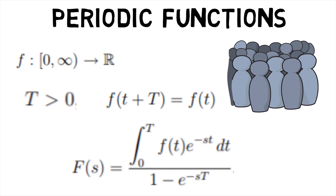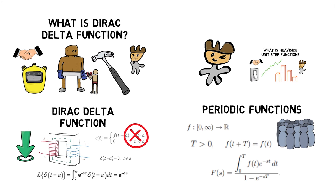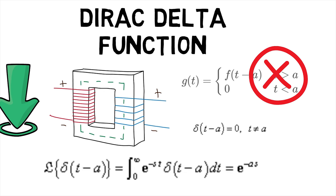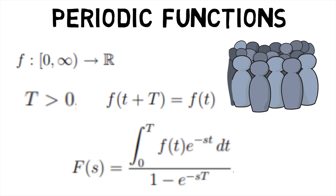The Laplace transform of f(t) is given by integral of f(t)e^(-st) dt from zero to T, divided by 1 - e^(-sT). Hence, we first saw what the Dirac delta function is and then went on to see what periodic functions and their Laplace transforms are.